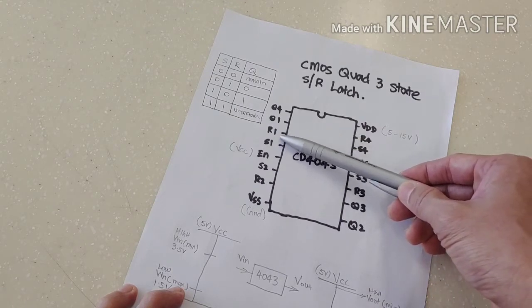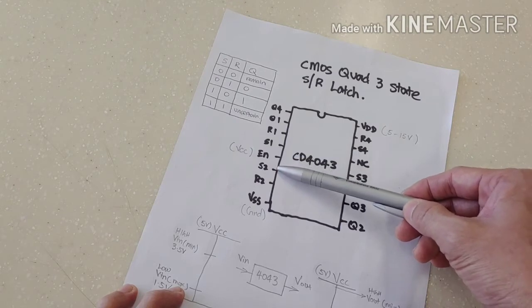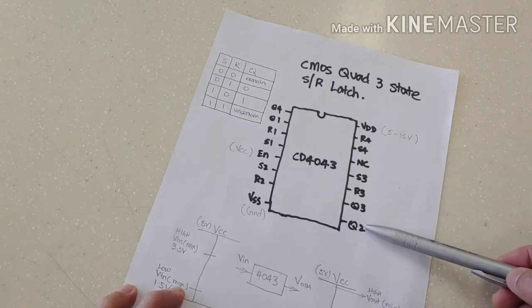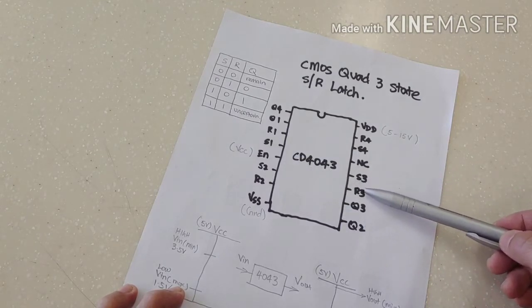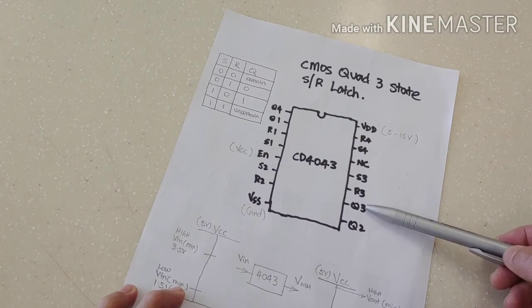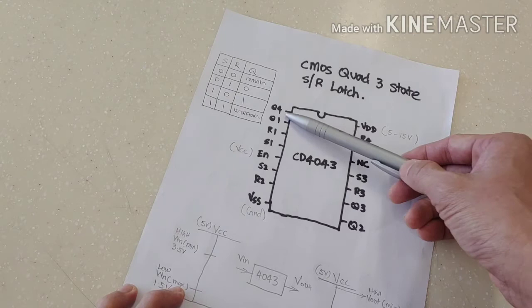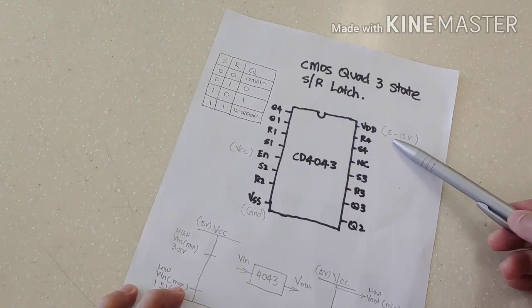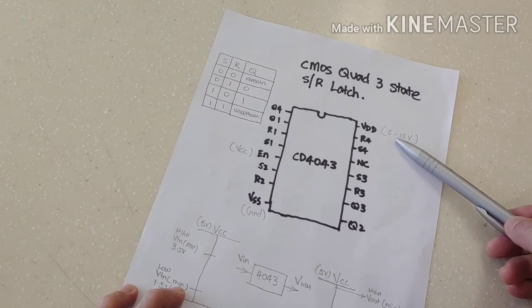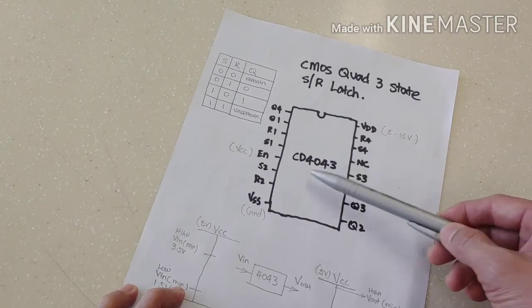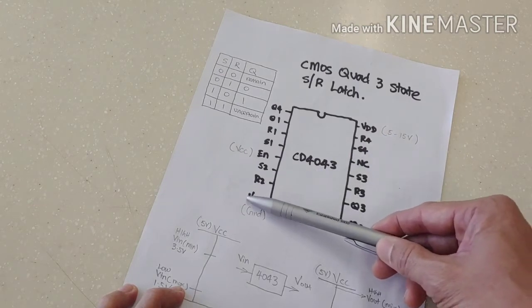S1R1 corresponds to Q1, S2R2 corresponds to Q2, S3R3 corresponds to Q3, S4R4 corresponds to Q4. Your VDD is your supply and this chip can take between 5 to 15 volts. Usually we'll stick with 5 volts for our course, and VSS is your ground.